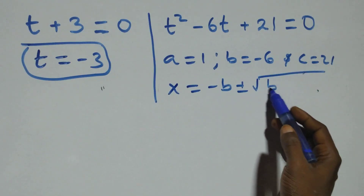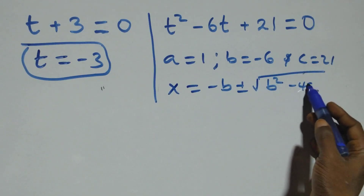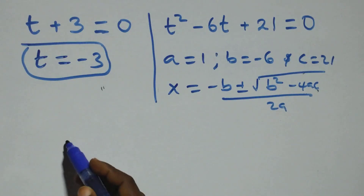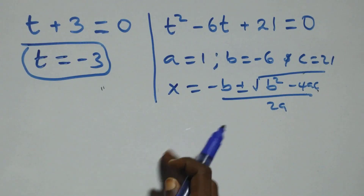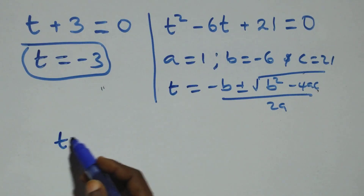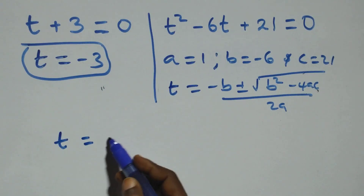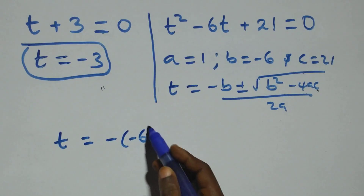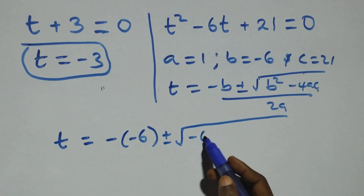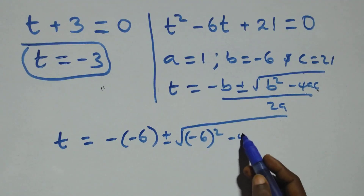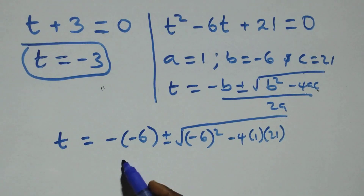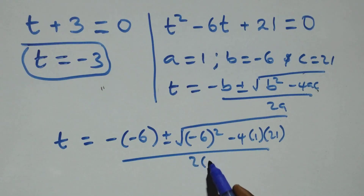Applying the quadratic formula x = (−b ± √(b² − 4ac)) / 2a, we get t = (6 ± √(36 − 84)) / 2, which is t = (6 ± √(−48)) / 2.